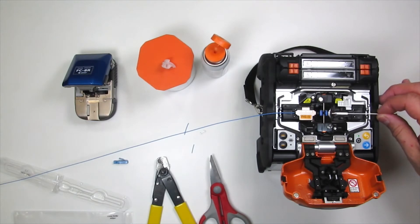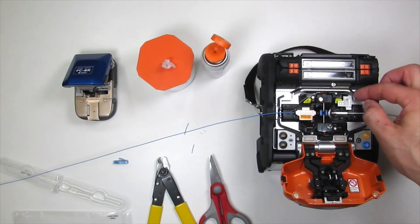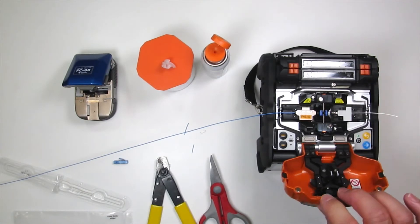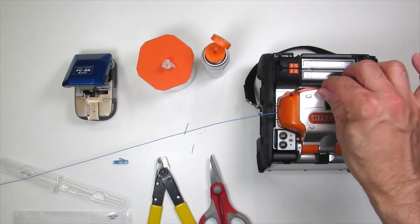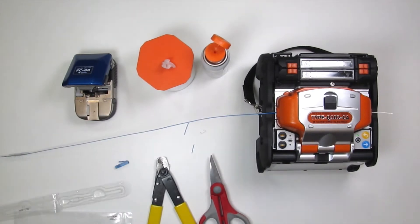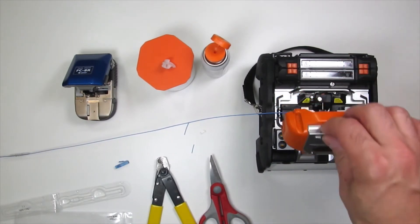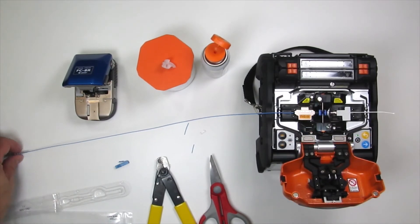Use the white handle to move the ferrule sub-assembly. Never touch the fiber stub. Gently close the lid, being careful not to pinch the fiber. Start the splice program.